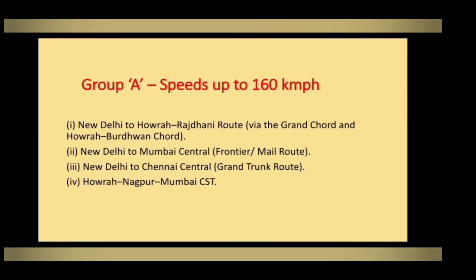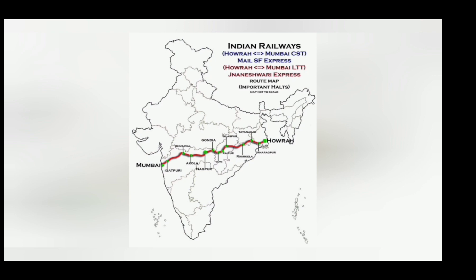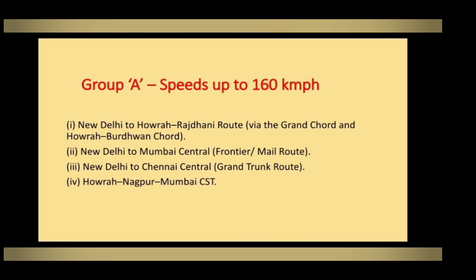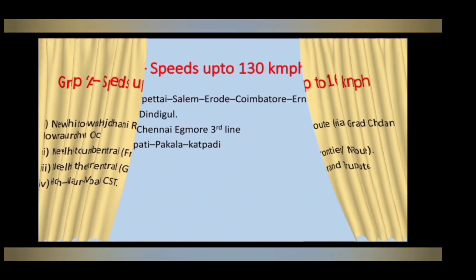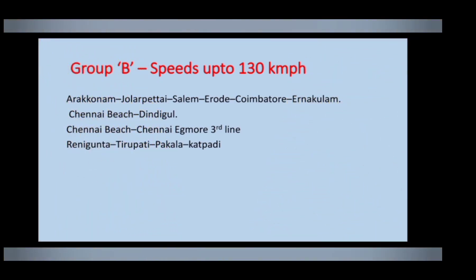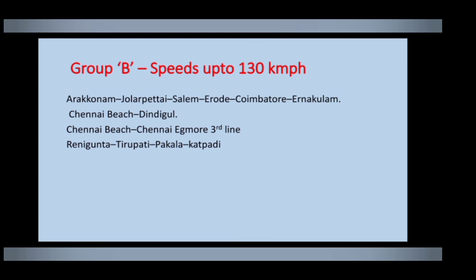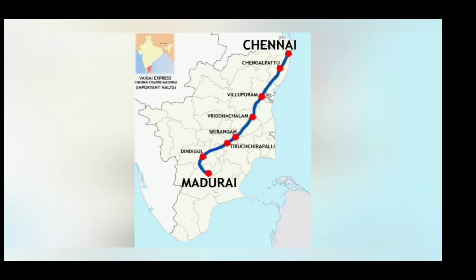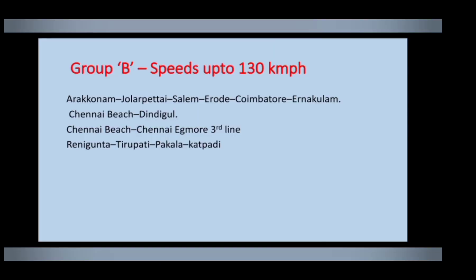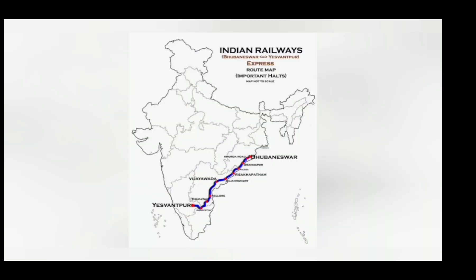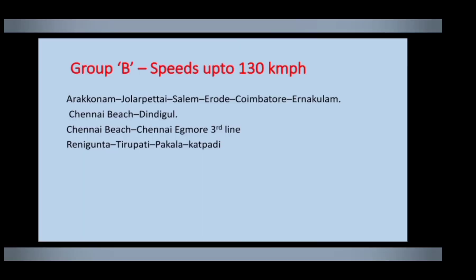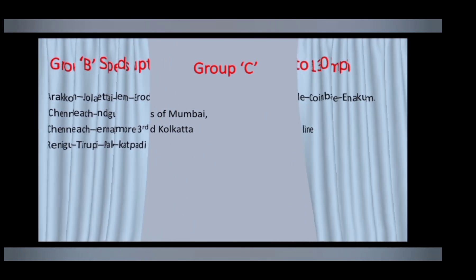In the Chennai network under Southern Railway, the Chennai Beach to Dhindukkal line is a Group B line, and the Chennai Beach to Chennai Egmore Tambaram line is also a Group B line. The Renigunta–Tirupathi–Katpadi line is also a Group B line. These are the major Group B lines in Southern Railway.